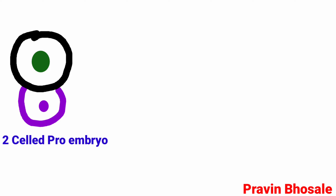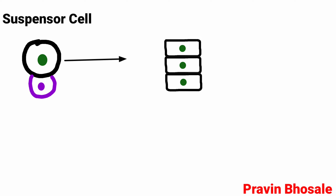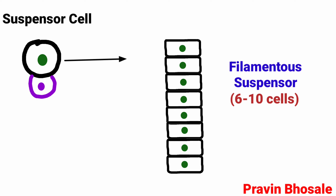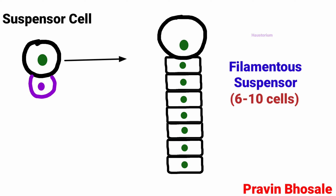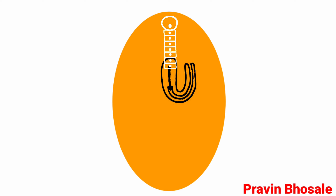In both cells, cell division takes place at the same time, but let's study them separately. The suspensor cell divides transversely in one plane to produce a filamentous suspensor of 6 to 10 cells. The first cell of the suspensor towards the micropylar end becomes swollen and functions as a haustorium. The lowermost cell of the suspensor is known as hypophysis. The suspensor helps in pushing the embryo deep inside the endosperm.